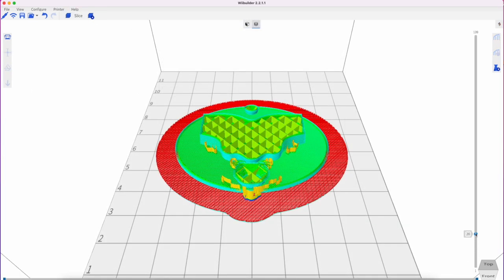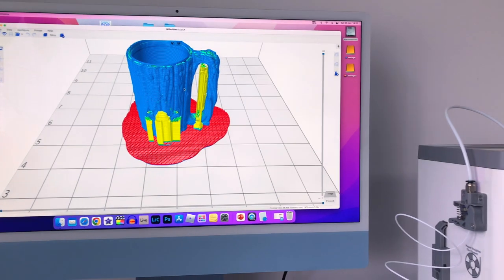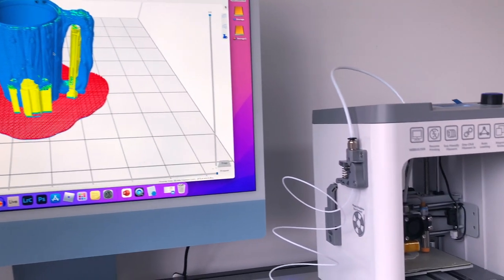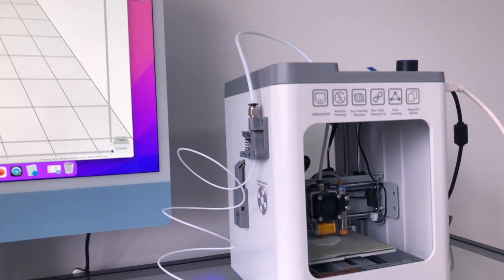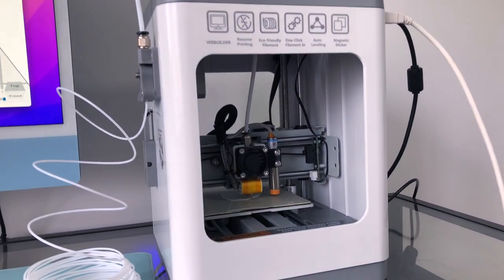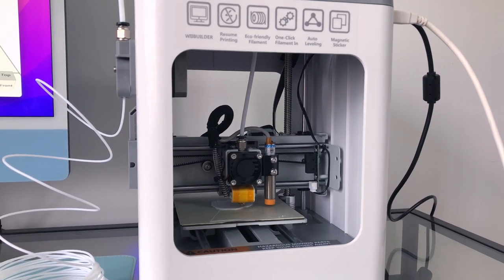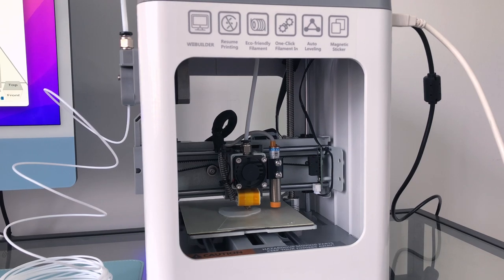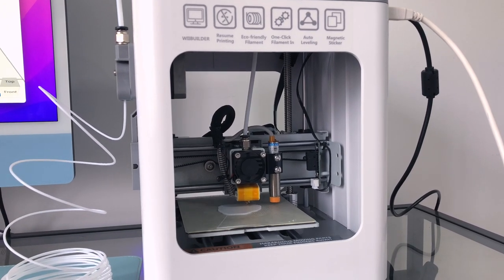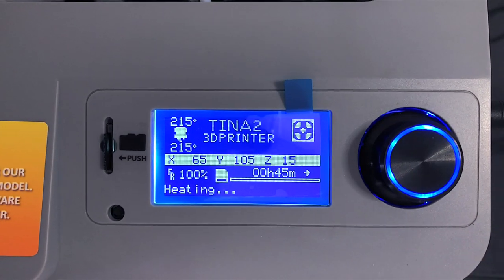The auto bed leveling is amazing on a printer at this price. Manual bed leveling is the hardest thing to get right when starting with 3D printing. Without a heated bed it won't be able to print high temperature filaments like ABS or PETG, but it prints PLA and TPU great, and most people use PLA for about 90% of prints anyways.